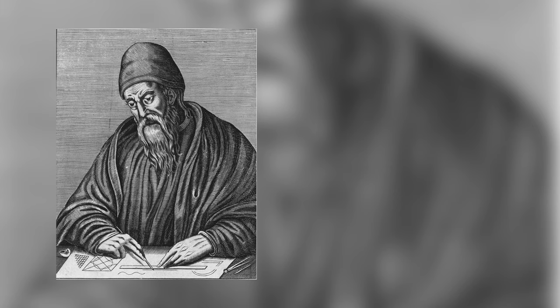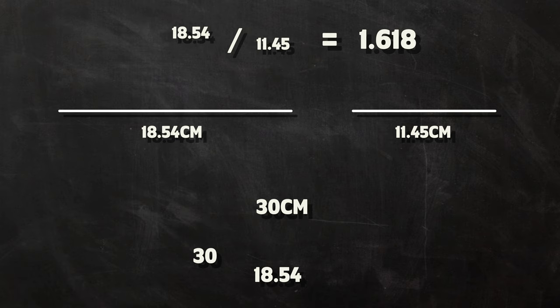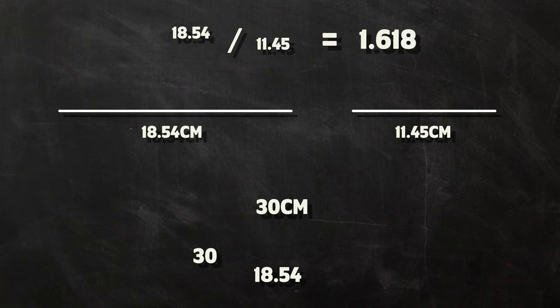The Greek mathematician Euclid, back around about 300 BC, first described it as the division of extreme and mean ratio. He came to the conclusion that if you draw a line and break it into two parts, if the ratio between those two parts is the same as the ratio between the overall length and the larger part, the parts are said to be in the golden ratio.